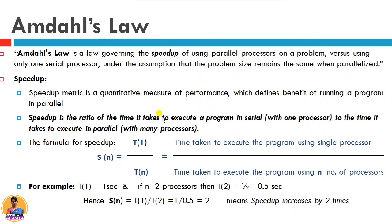Speed up is a quantitative metric of performance. If we have to measure performance compared to single processes versus parallel processes, we use the speed up metric. It defines the benefit of running a program in parallel. Speed up is a ratio: the time to execute a process in a single processor divided by the time to execute the same process in multiple processors. Speed up is the ratio of the time to execute a program serially with one processor to the time to execute it in parallel with many processes.